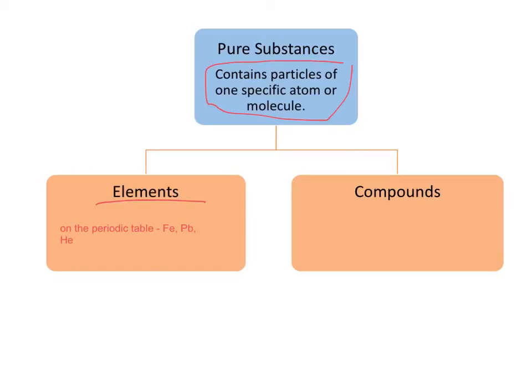Now this also includes diatomic molecules, HONClBrIF, so that would be hydrogen, nitrogen, oxygen, fluorine, chlorine, bromine, iodine. Those are all made of one specific type of element, so they are considered elements even though there's two elements of the same type bonded together.